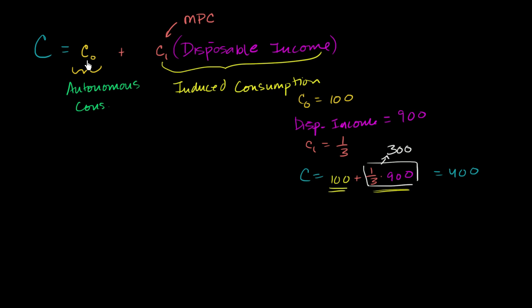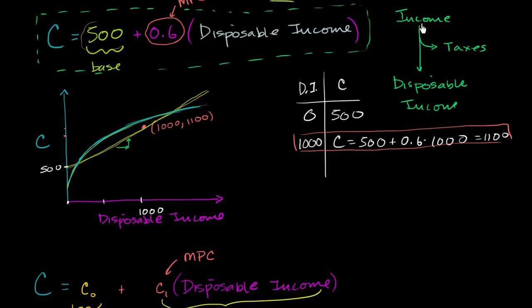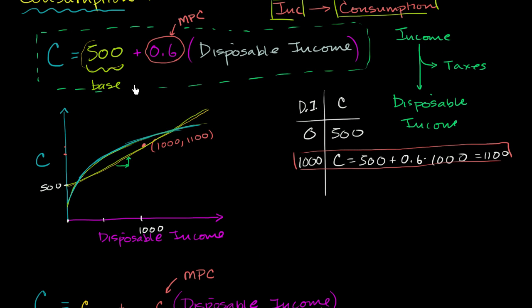I wrote it in general terms using variables. But I also said I'd express aggregate consumption as a function of aggregate income, not just aggregate disposable income. The relationship between disposable income and overall income is fairly simple: the government takes some fraction out for taxes, and what's left is disposable income. And aggregate income is the same thing as aggregate expenditures, which equals aggregate output — that is, GDP. So disposable income equals GDP minus taxes.